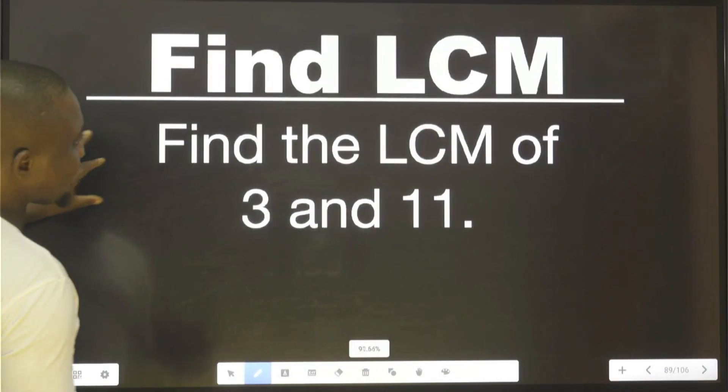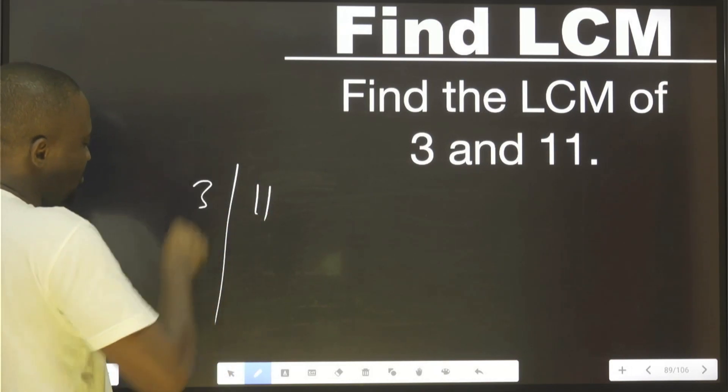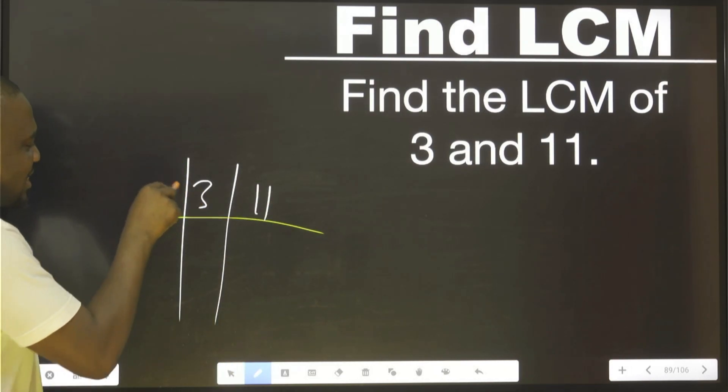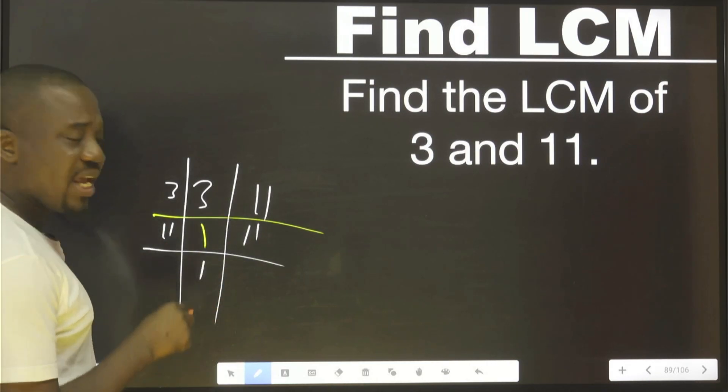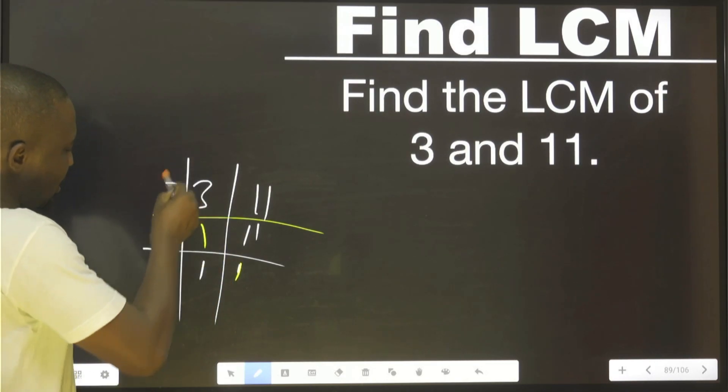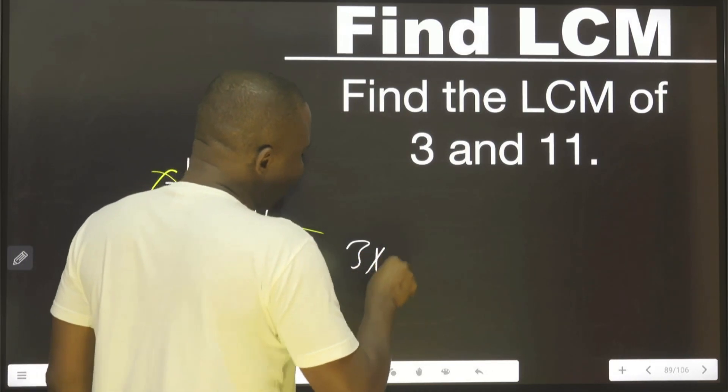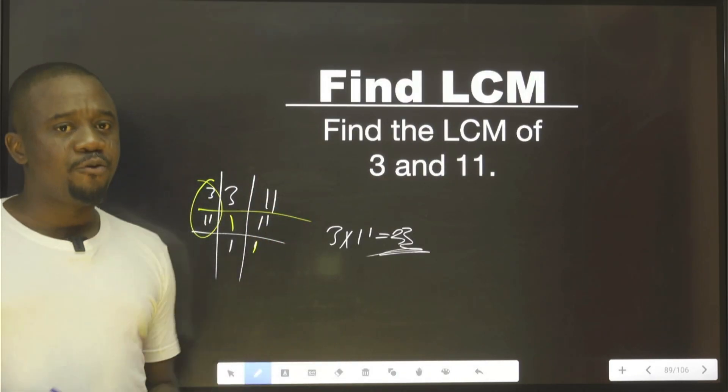Let's do this. That is, LCM of 3 and 11. 3 and 11. What can I use to divide this? 3 can go. Can 3 go this? No. Then, I use the eleven this time. Because 11 is the least I can use here. This would be 1 too. This is my LCM. 3 times 11. Which is 33. This is so easy. Thank you for watching.